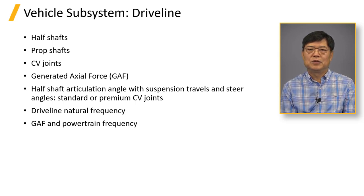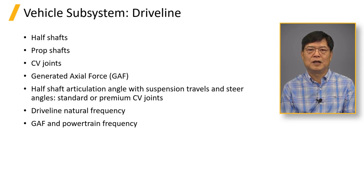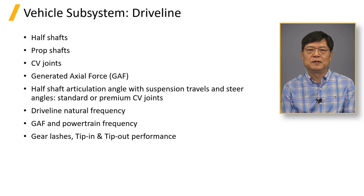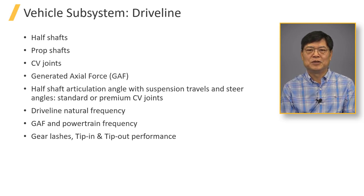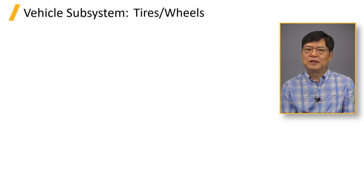Driveline torque reversal in electric vehicles, especially during regenerative braking, crosses driveline lash. Substantial torque reversal can cause issues with bushing and mount deflection from one travel stop to the other. The tip-in and tip-out bring performance issues of jerk and clunk noise.